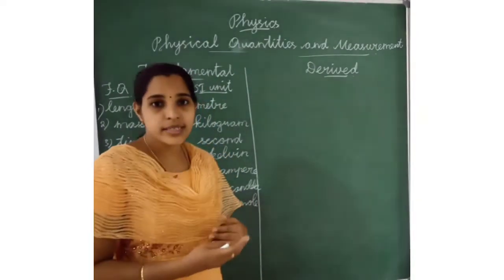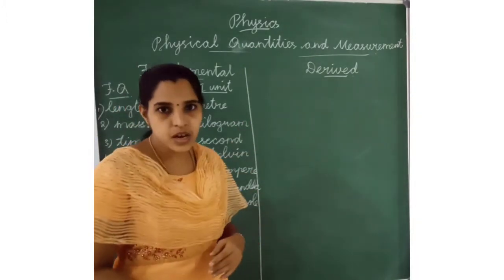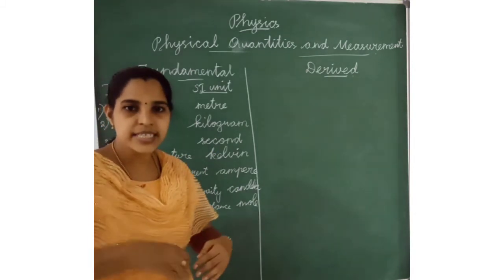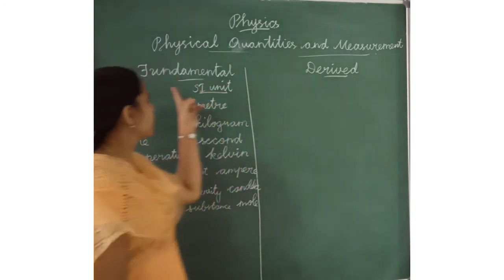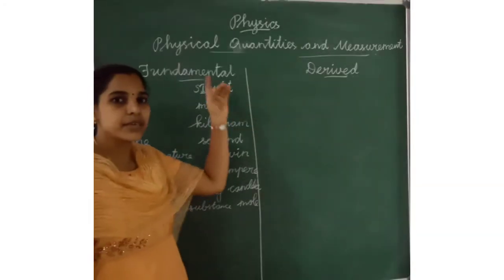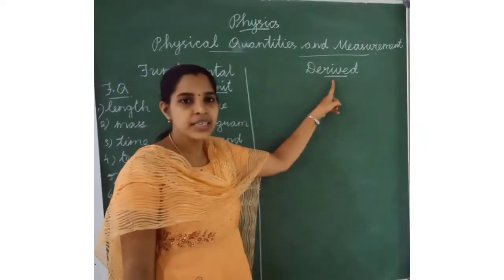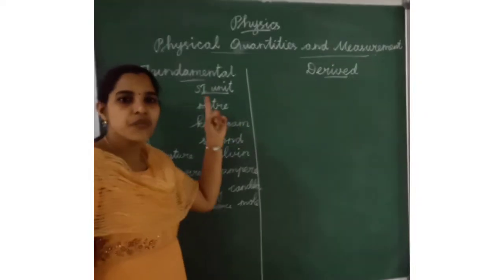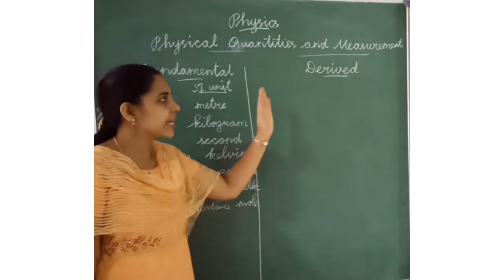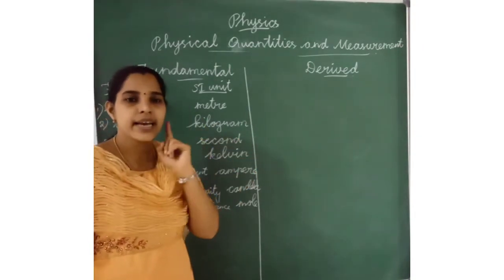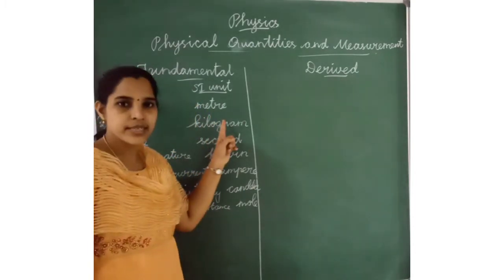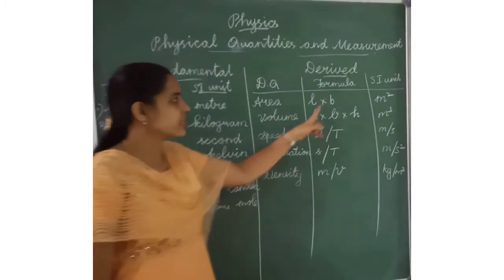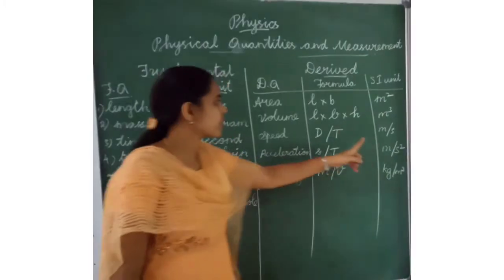Derived quantities are physical quantities that are defined in terms of fundamental quantities. It means in the derived quantities, any one fundamental quantity will be present in the formula. These are the derived quantities, their formulas and SI units.